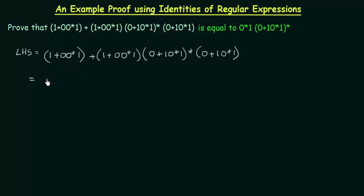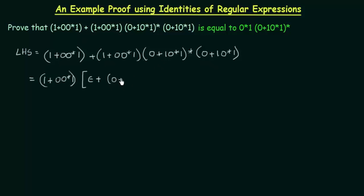Taking (1 + 0·0*·1) as common, the first occurrence becomes epsilon, and we are left with: (1 + 0·0*·1) · (ε + (0 + 1·0*·1))* · (0 + 1·0*·1). The two remaining terms inside are (0 + 1·0*·1)* and (0 + 1·0*·1).